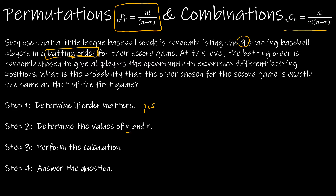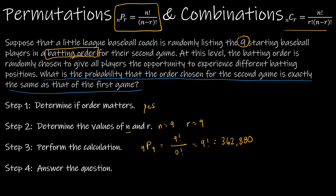For the batting order: N = 9 players, R = 9 (choosing all of them). So 9P9 = 9 factorial divided by (9 minus 9) = 0 factorial. 9 factorial is our solution: 362,880 ways. The question then asks for the probability that the order chosen for the second game is exactly the same as the first game. There are 362,880 possible orders and only one matches the first game, so the probability is 1 over 362,880. The permutation gives us the number of ways, but we still calculate the probability ourselves.